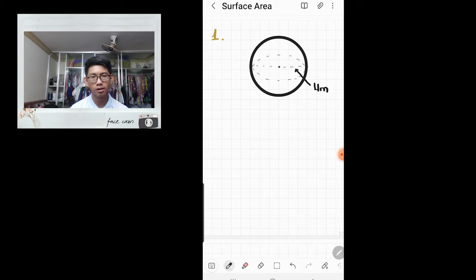Moving on, as you can see in this diagram, there's a sphere with a diameter of 4 meters. Our goal here is to find the surface area of this sphere.